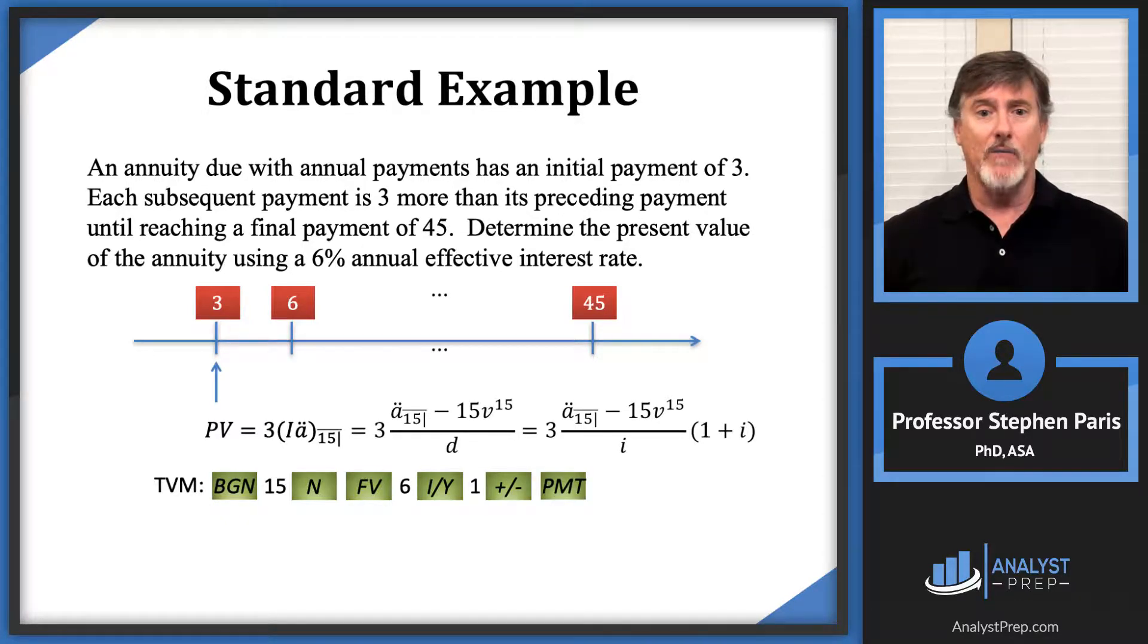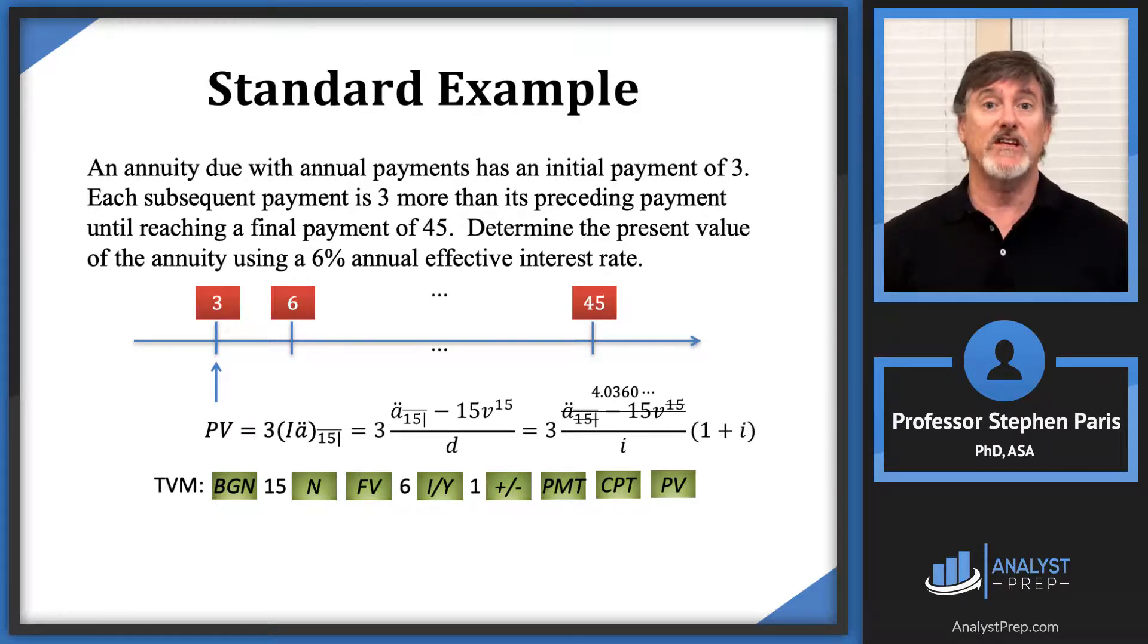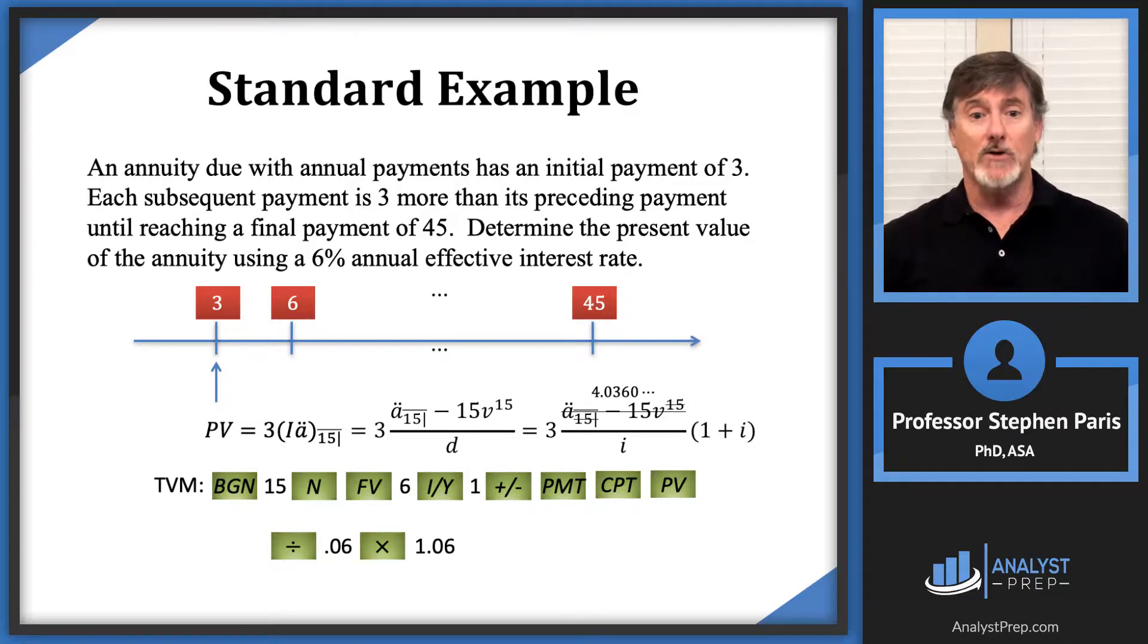When I compute the present value, that actually gives me the entire numerator on that expression. So I got a 4.036 number there. Now that's sitting in my calculator—I've got the numerator sitting in my calculator—so I would need to divide that by i, in other words divide by 0.06, then multiply by 1.06, and I still have to account for the 3, so then multiply by 3, hit the equal sign, and that gives you your result: I get 213.91 as that present value.